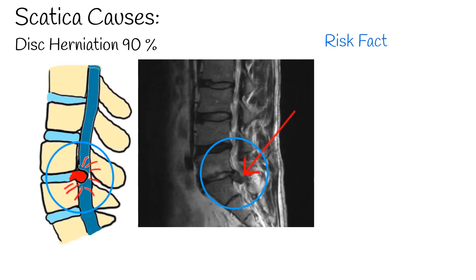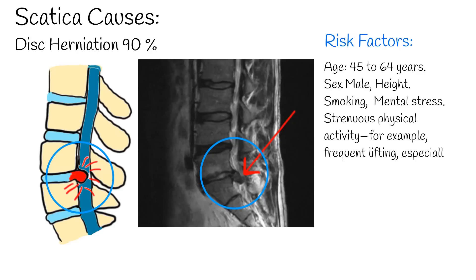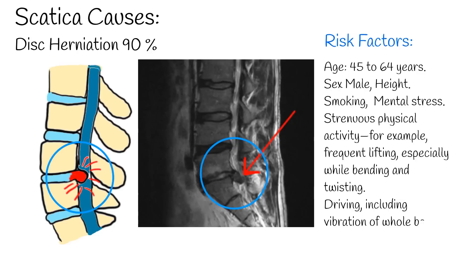Risk factors for sciatica include age — most commonly between 45 and 64 years — and men are more frequently affected than women. Taller height increases risk. Other risk factors include smoking, mental stress, strenuous physical activity such as frequent lifting especially while bending and twisting, and driving including whole-body vibration.